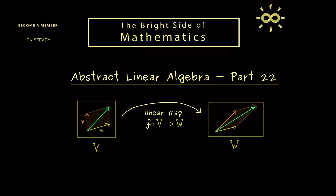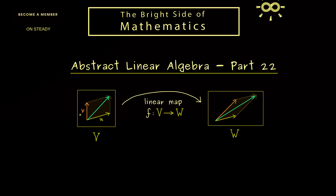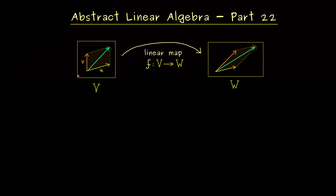With a linear map you will not introduce any curves on the right hand side. This is the result of conserving the linear structure, which just consists of the vector addition and the scalar multiplication. This is something we have already discussed in Rn, but it also holds in this general context.